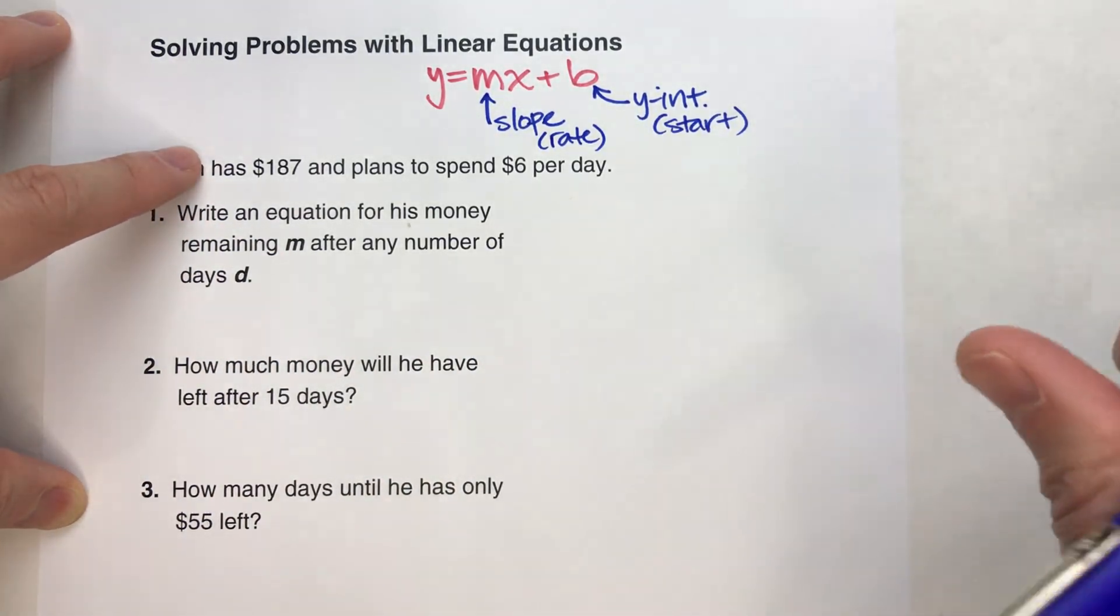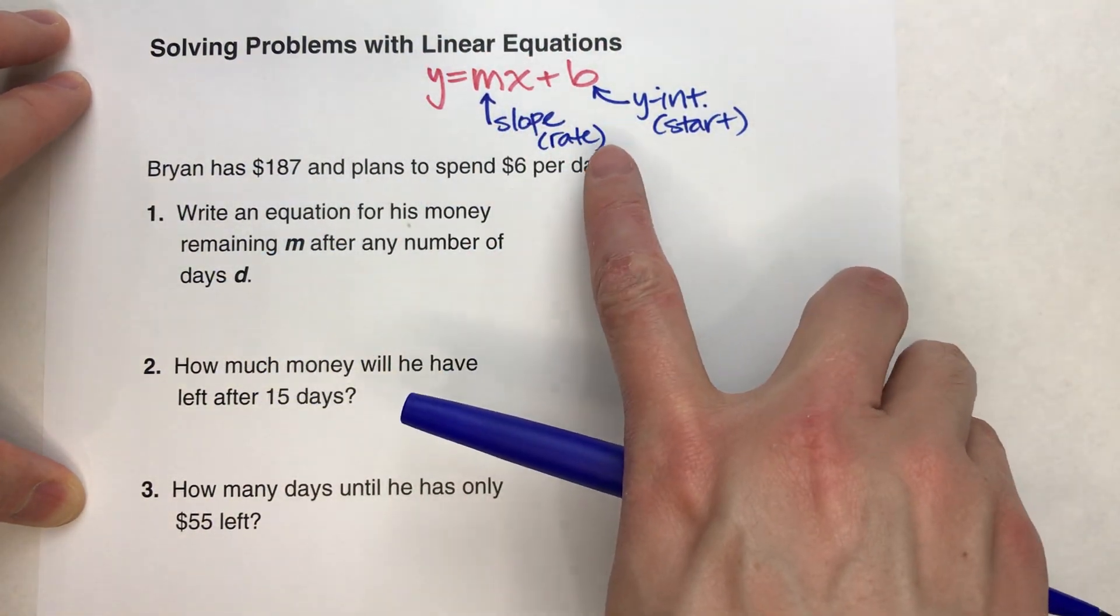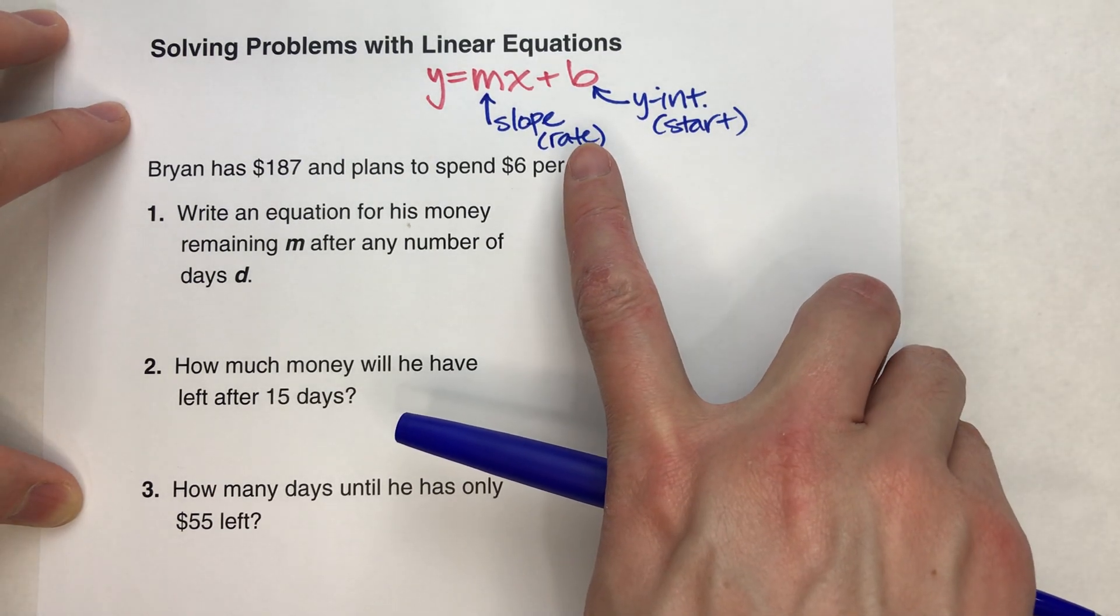And you can think of the y-intercept as the starting amount of whatever it is you're dealing with. Now the other thing to point out is it doesn't have to use the variables y and x to write a linear equation. We can use other variables too.